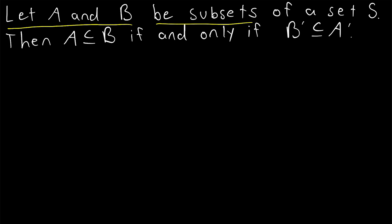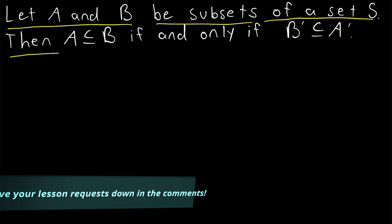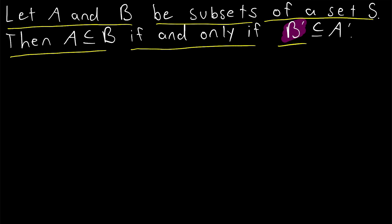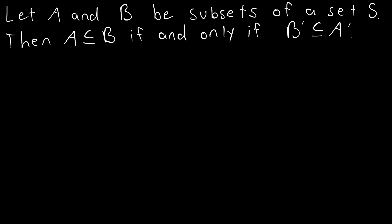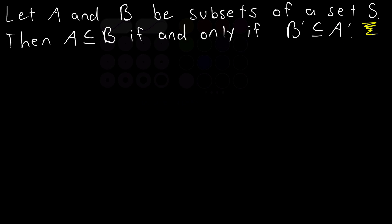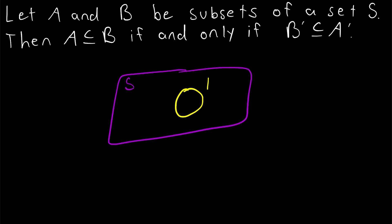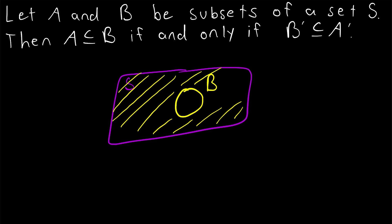Let A and B be subsets of a third set S. Then A is a subset of B if and only if the complement of B, which we're writing as B prime, is a subset of A complement. We'll be proving this simple set theory result in today's Wrath of Math lesson. The set S here is our universal set, so the complement of B and the complement of A are both taken with respect to S. If this purple box is our set S and this yellow circle is our set B, then B complement is everything that is in S but not in B — and similarly for the complement of A.